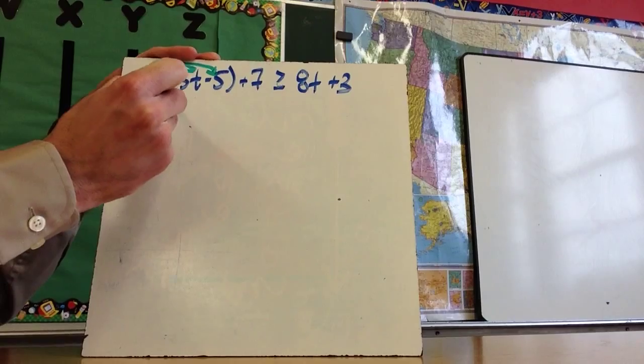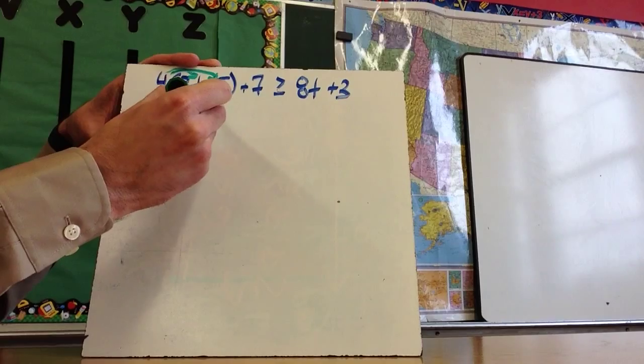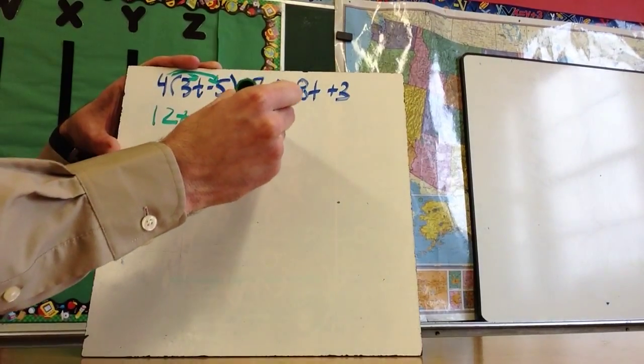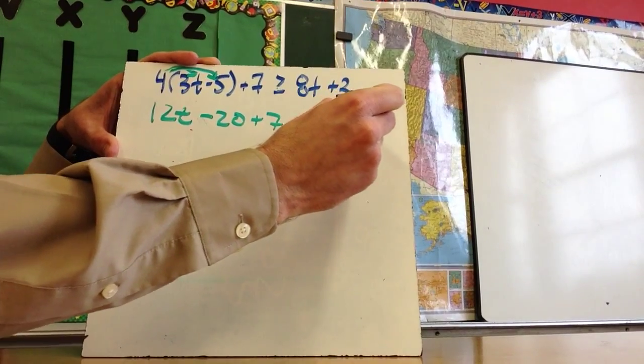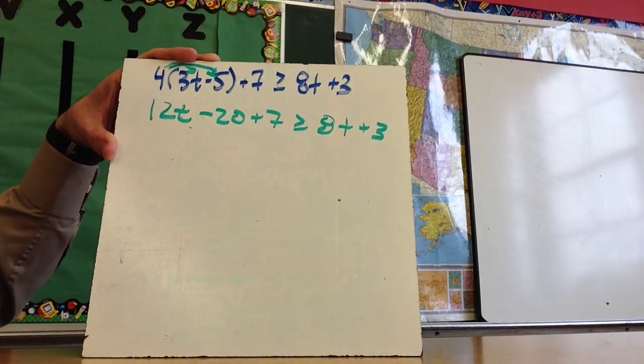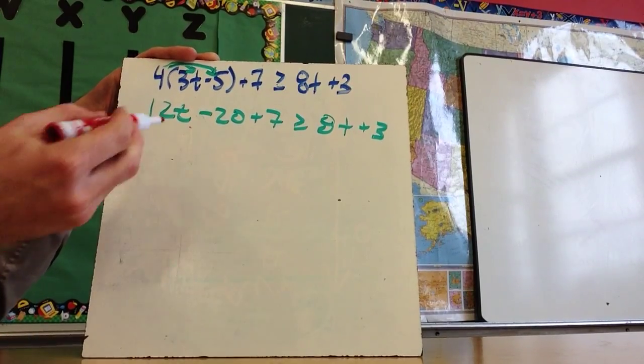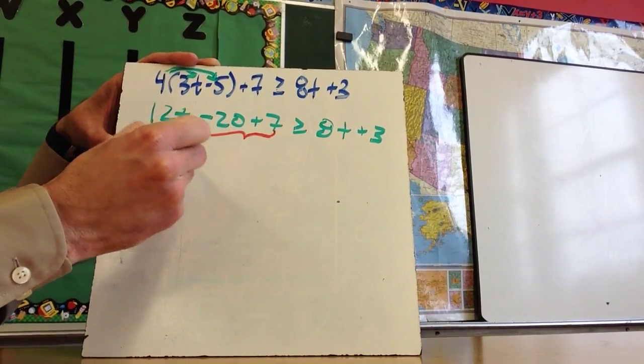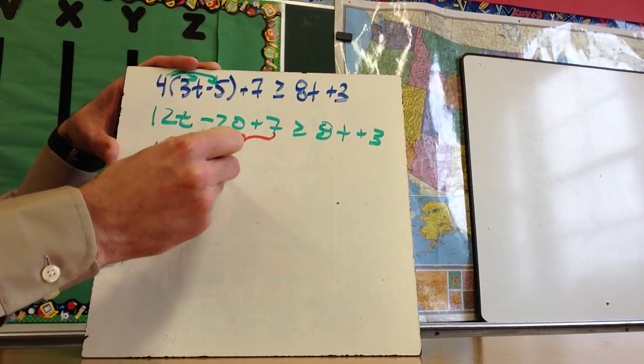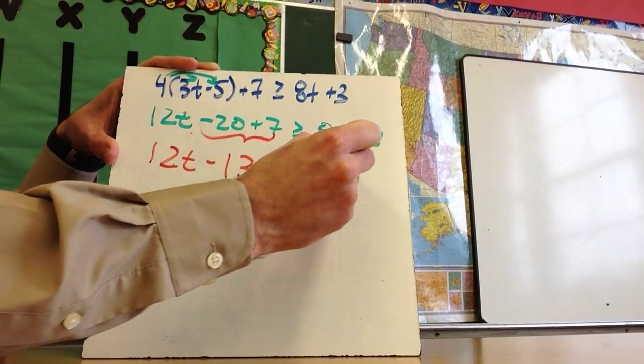And this becomes 12t minus, it should be a minus, minus 4 times -5 is minus 20, no that's plus, -4 times -5 is plus 20, plus 7, greater than or equal to 8t plus 3. Now what I want to do is combine like terms, so I'm looking to combine these two. And so I now have 12t minus 13 is greater than or equal to 8t plus 3.